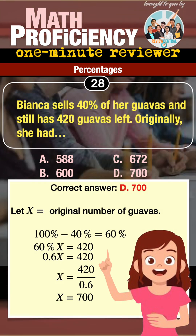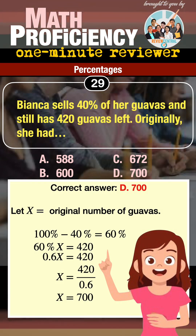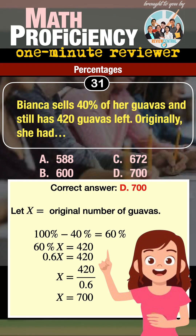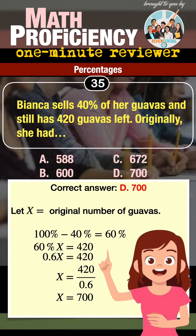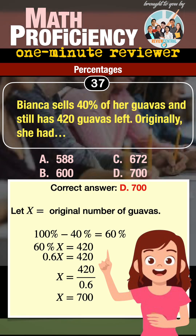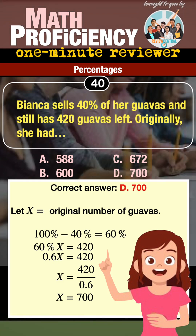She sold 40% of her guavas, so she must have 60% left, which is stated in the problem to be 420 guavas. Therefore, 60% of x equals 420.